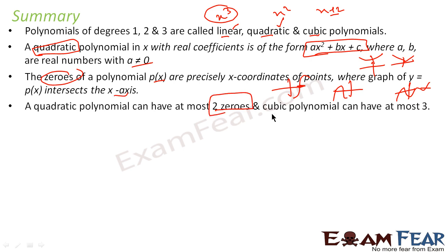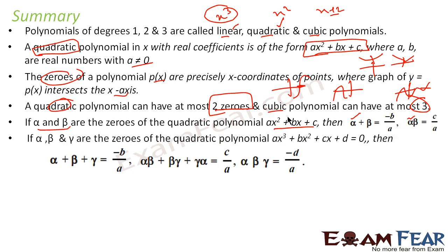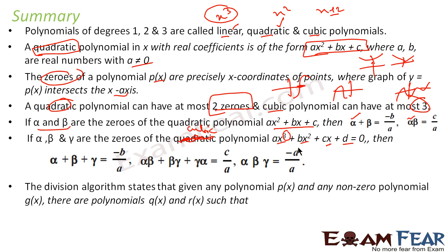If alpha and beta are roots of the quadratic ax² + bx + c, then alpha + beta = −b/a and alpha·beta = c/a. Similarly, for a cubic polynomial ax³ + bx² + cx + d with zeros alpha, beta, and gamma: alpha + beta + gamma = −b/a, alpha·beta + beta·gamma + gamma·alpha = c/a, and alpha·beta·gamma = −d/a.